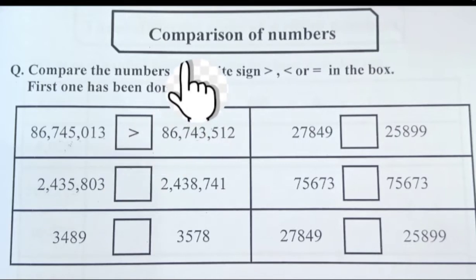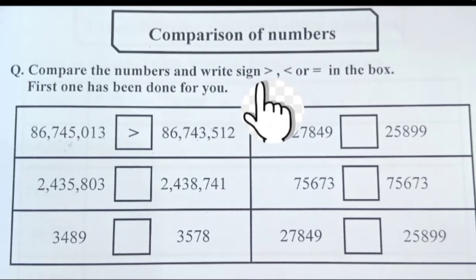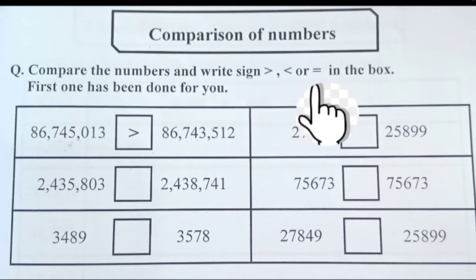So class, comparison of numbers basically is when we compare whether one number is greater than another number, one number is smaller than another number, and one number is equal to another number.